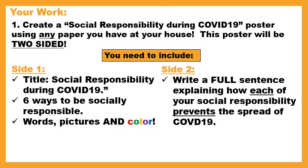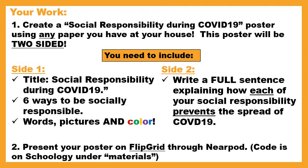On side two there's no color required, but I do want a full sentence explaining how each of your social responsibility examples prevents the spread of COVID. Just like a brochure, we're going to present our poster on Flipgrid through Nearpod, and the code is on Schoology under materials if you need to look at that.